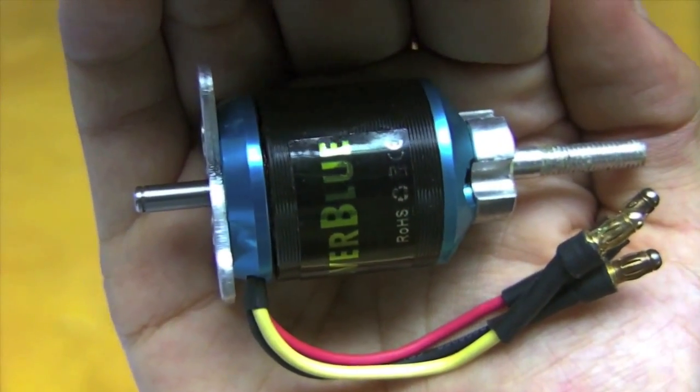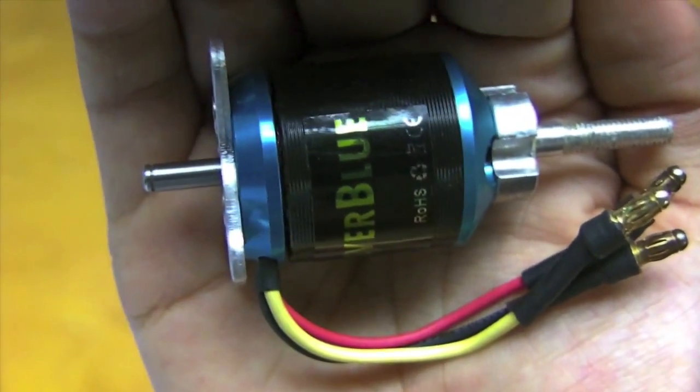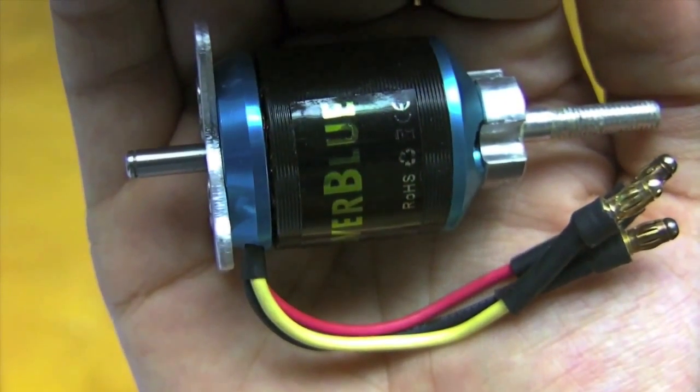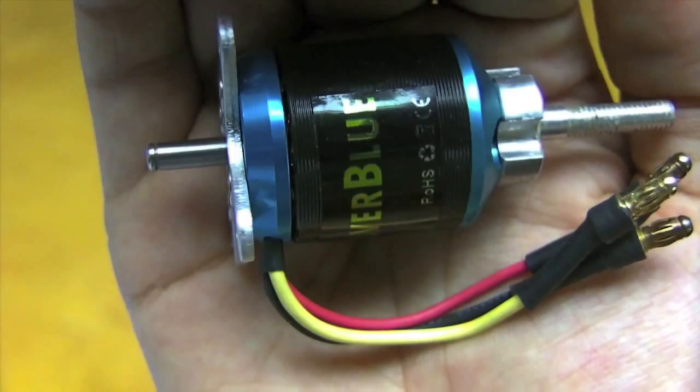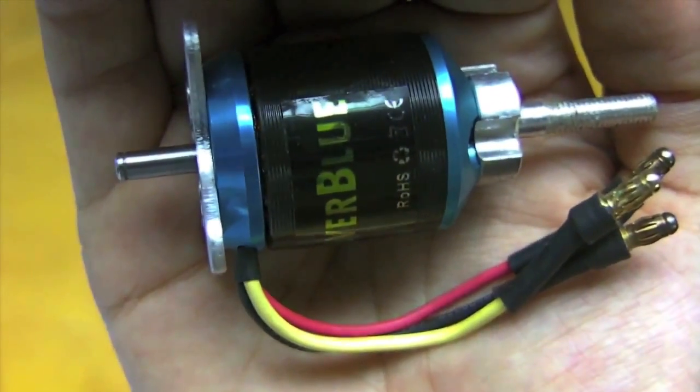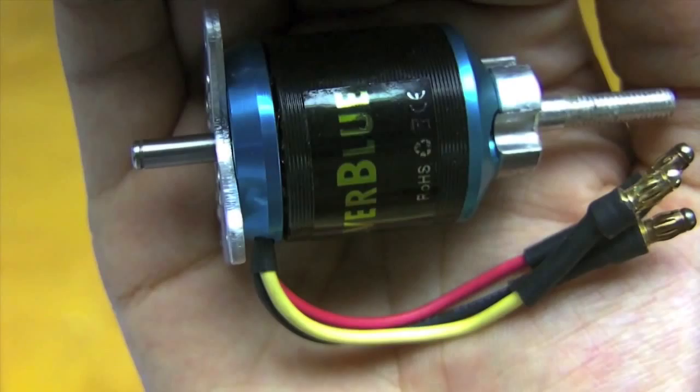Brushless motors have three wires, unlike brushed motors. These are used to energize different phases of the motor at different times. You'll notice that one's red, one's black, and one's yellow. This does not mean power, ground, and signal, like in servos. To make one work, you have to use an ESC to time the pulses of the current in the right order.